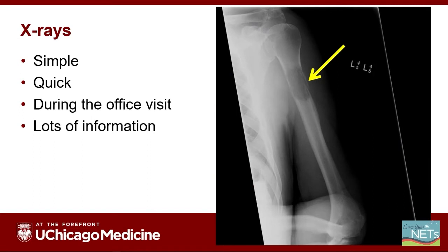As an orthopedic surgeon, I love x-rays. They are a very simple, quick test that can be done during an office visit. They provide me with a lot of information about the size, location, and impact of that tumor on the bone. Here you can see the yellow arrow pointing to an area of a bone that appears darker than the bone above or below that spot. It has this appearance because there's a tumor in the bone that's begun to destroy and weaken it, causing this patient to have shoulder and arm pain.